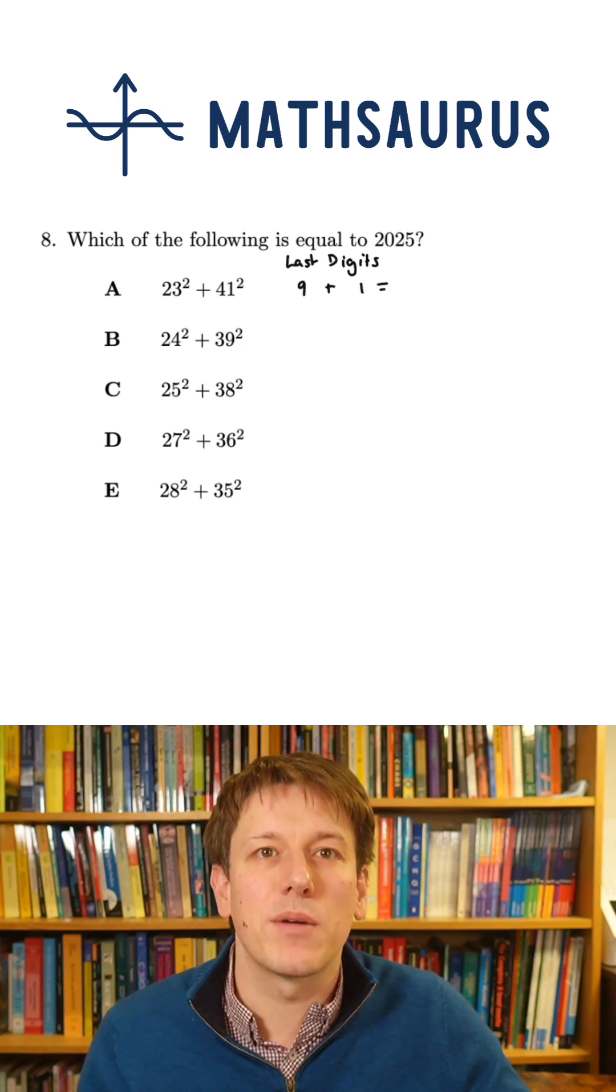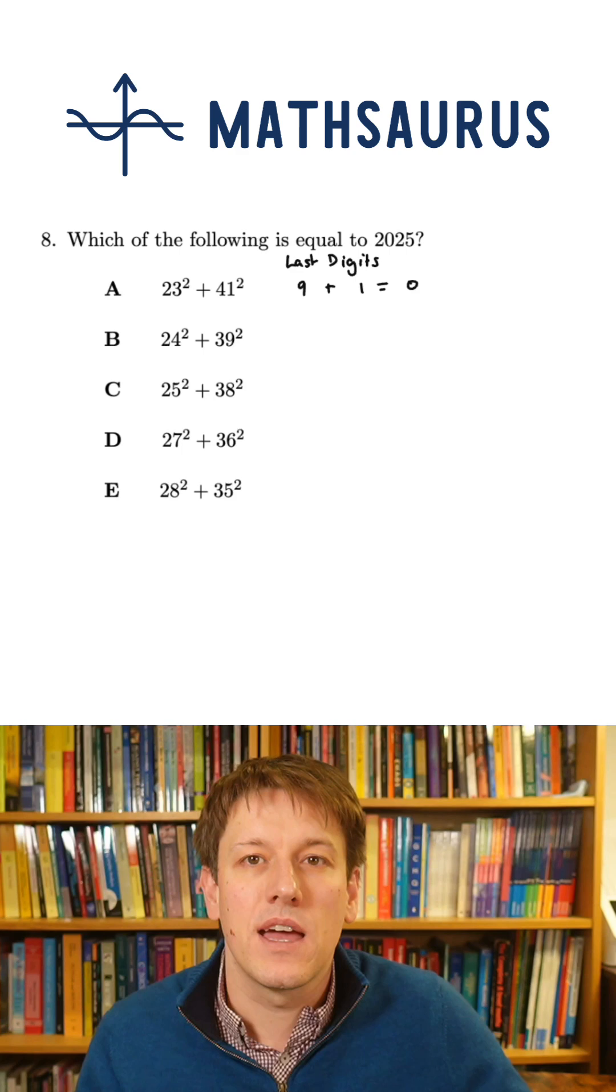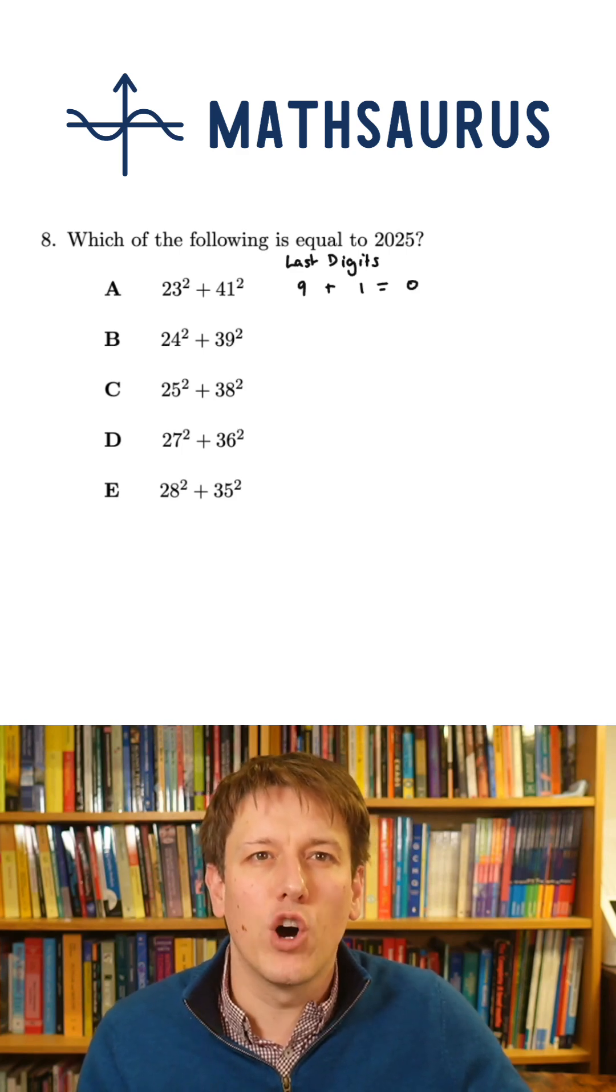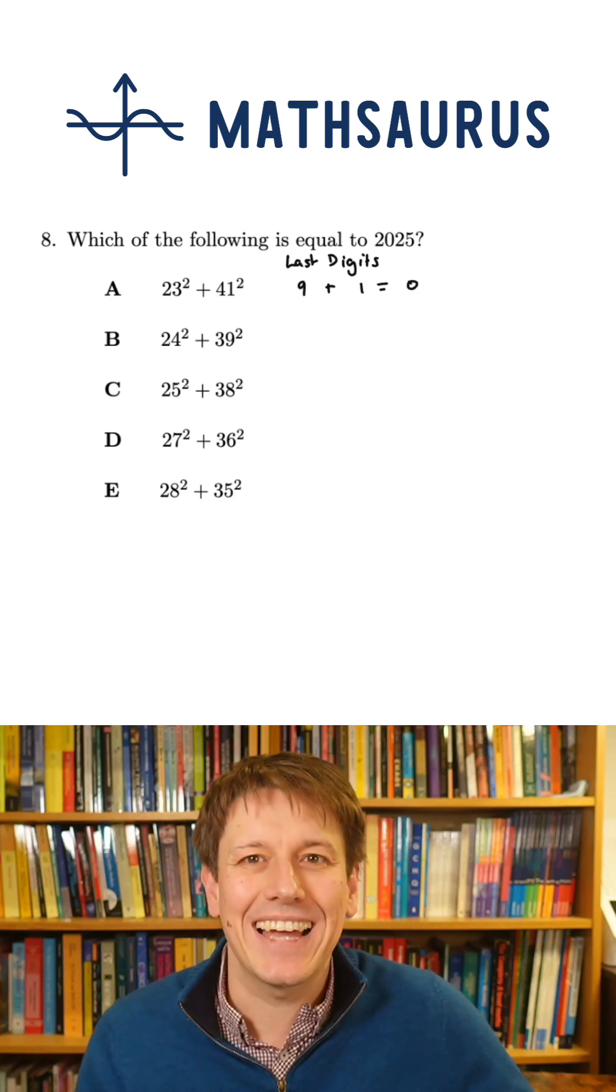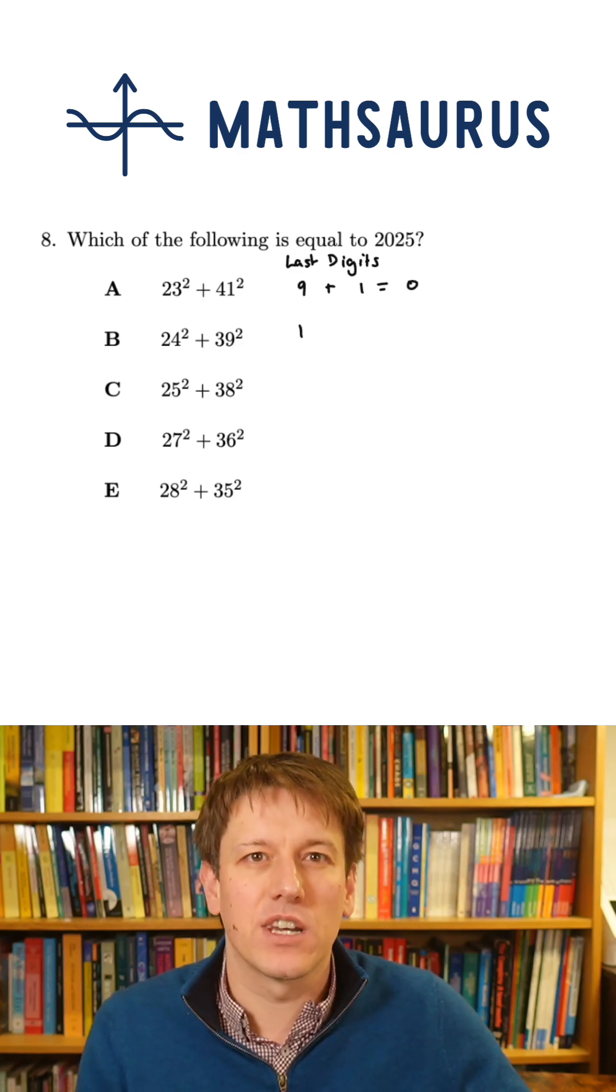And so when I add those together, the number I'm going to end up with has last digit 0 because 9 plus 1 is 10 and 0 is the last digit of 10. So if we go through all the different options, we can see whether we've got any candidates that could be 2025. So A would end in a 0, that's not going to be 2025.